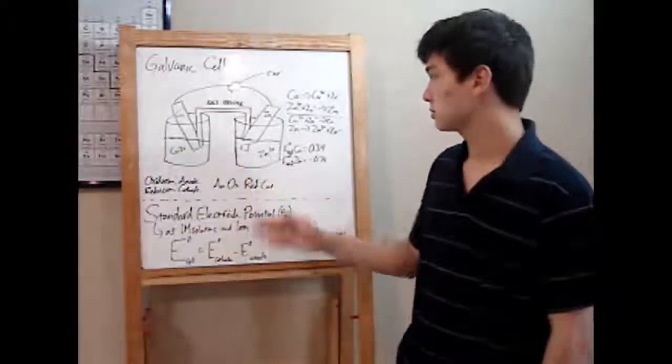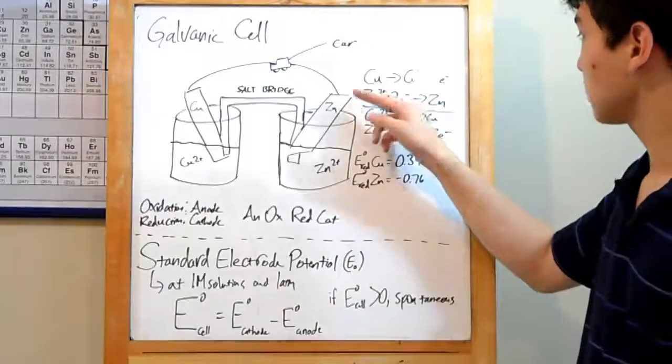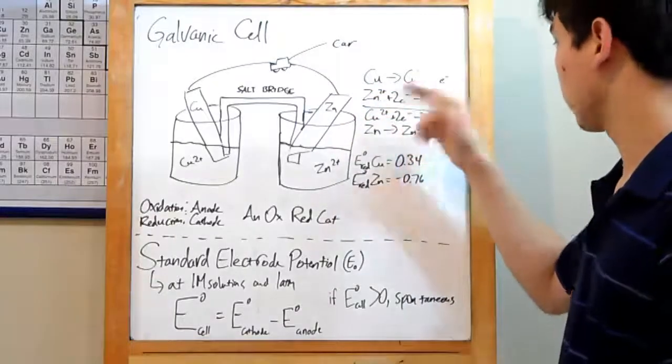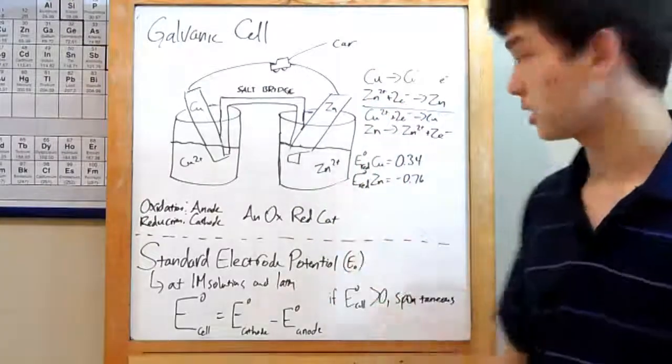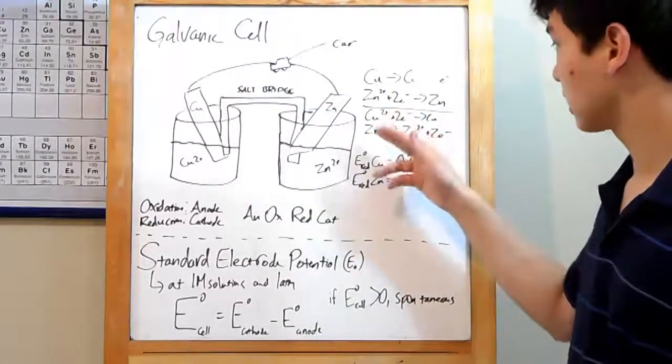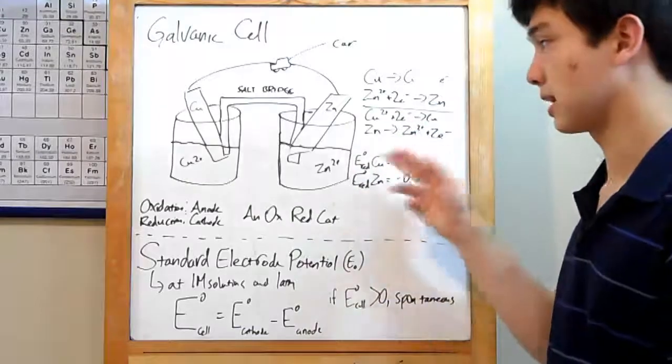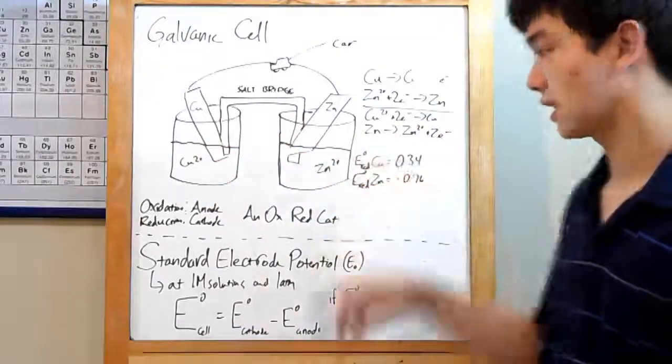Here, there are two possible reactions that could occur. Copper becoming oxidized and losing two electrons. Zinc becoming reduced with those two electrons. Or, the other way around, copper getting reduced by two electrons to become neutral copper and zinc getting oxidized.